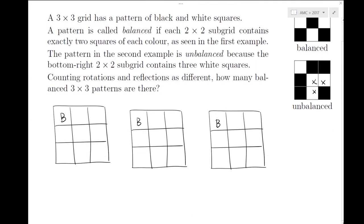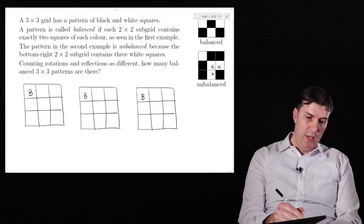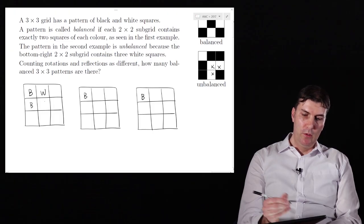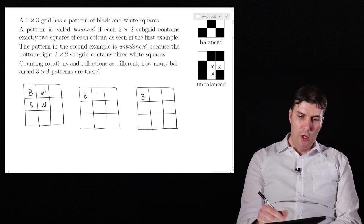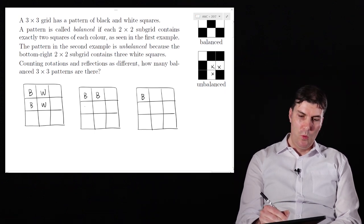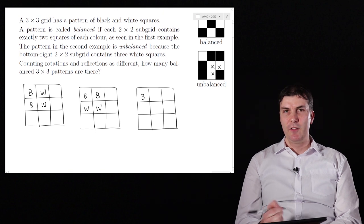So let's see how we can fill out this top left hand corner, and it turns out that there's only three ways to do it. We could go black black on the left and then white white down that middle column, or we could go black black across the top and then white white in the second row, and that's to make sure we've got two of each color.